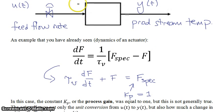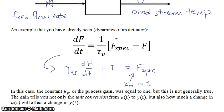For example if you go back to u of t being a feed flow rate and y of t being a product stream temperature, the value of kp cannot be 1 because you have two different units. We have flow rate on one side as an input and temperature on the other side as your output. So kp has to at least serve as a unit conversion from u of t to y of t. But also kp will tell you how much a change in u of t will affect a change in y of t.